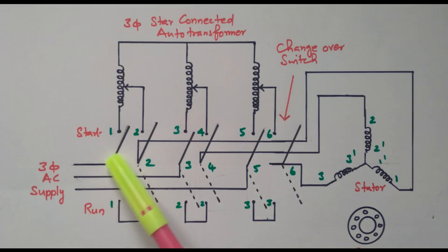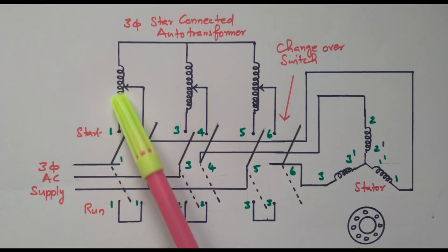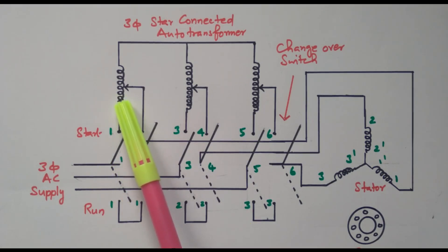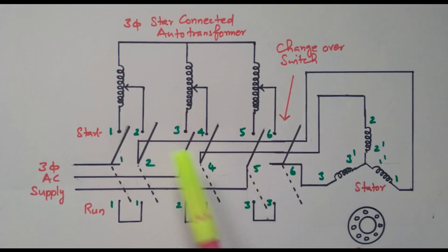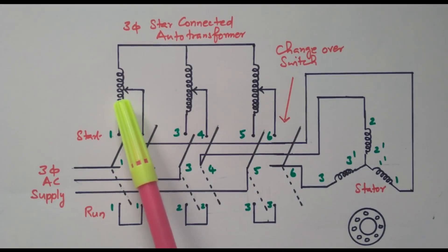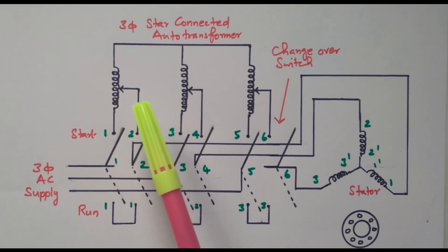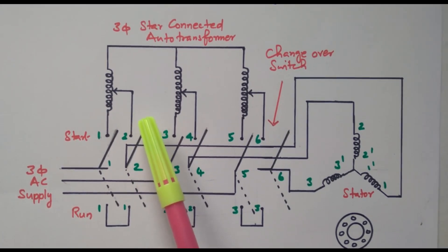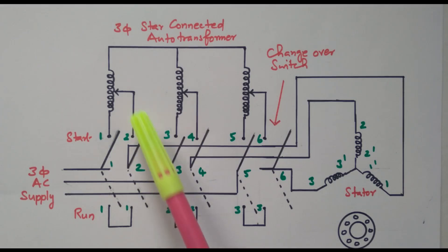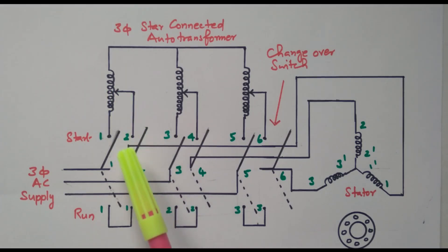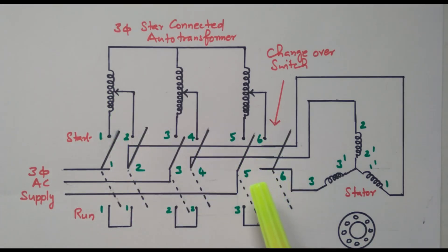Initially, the changeover switch is placed in the starting position — that is, through the auto-transformer. So initially, only a reduced voltage is applied to the three-phase induction motor using the auto-transformer. Only a smaller amount of voltage will be applied to the stator. After some time, when the speed of the induction motor gradually increases, the voltage is gradually increased by using the auto-transformer, so the voltage applied to the stator gradually increases.